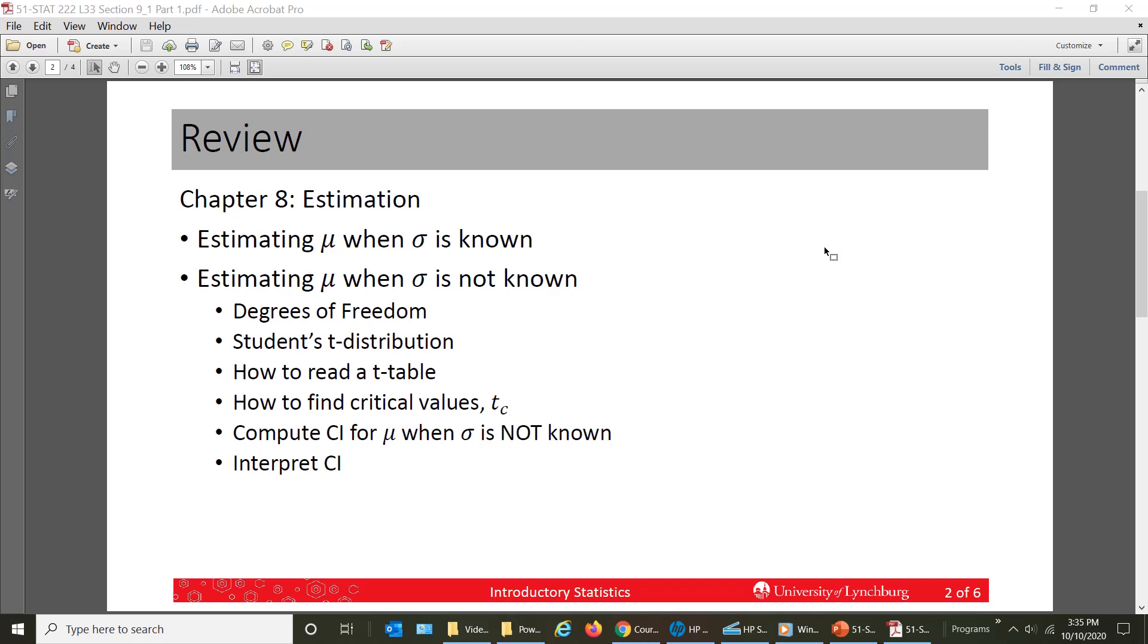In the last chapter, we learned how to calculate confidence intervals for the population mean when we knew sigma and we used the z statistic. We also learned how to calculate confidence intervals for mu when we did not know sigma and we would use s as the estimate for sigma and thus we had to use the t statistic to calculate the confidence interval.